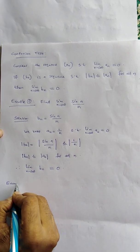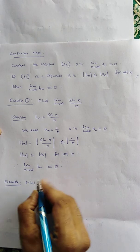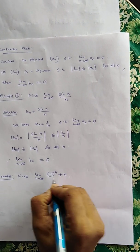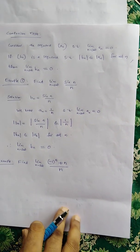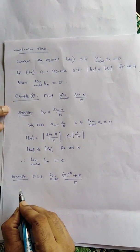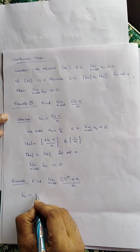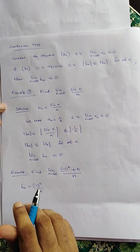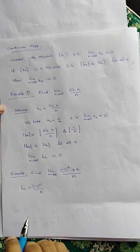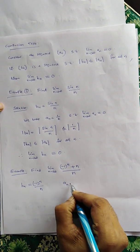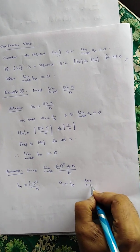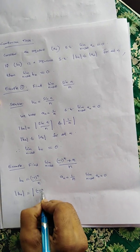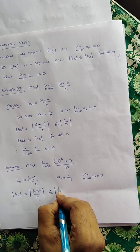Let us consider one more example. We consider the sequence b_n = ((-1)^n + n) / n. We focus first on the sequence b_n = (-1)^n / n, and compare it with a_n = 1/n. We know lim(n→∞) a_n = 0, and |b_n| = |(-1)^n / n| is clearly less than or equal to |1/n|.